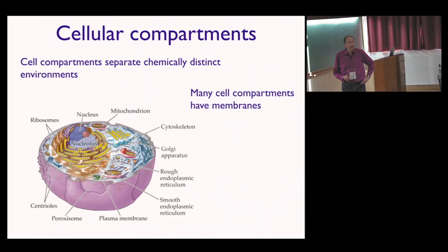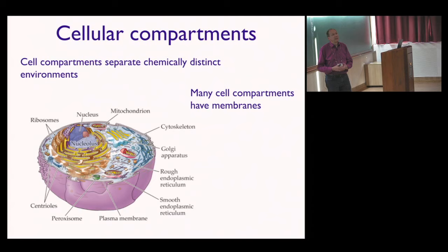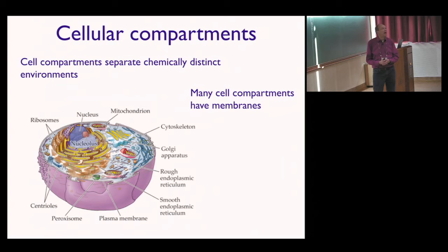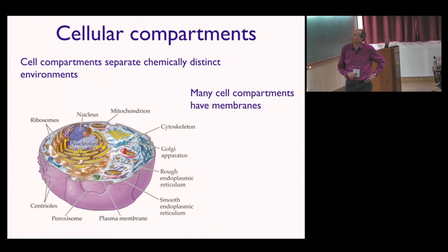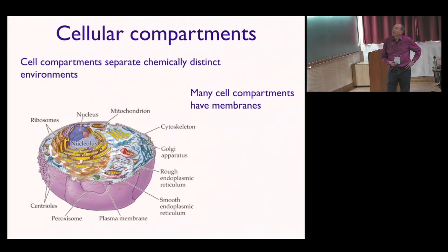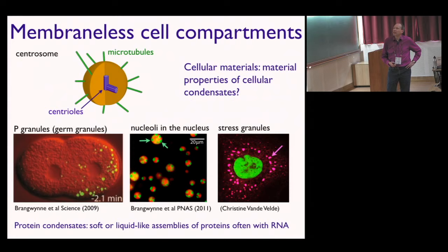Cells have to organize biochemistry in space. They have complex biochemical pathways and processes which sometimes have to be kept separate. The cell is a spatiotemporal pattern of activity. The classical picture of how chemical compartments are established is that membranes separate regions of different chemical composition from each other, defining the classical organelles — Golgi, mitochondria, and so on. These are all compartments with membranes to distinguish different chemical regions.